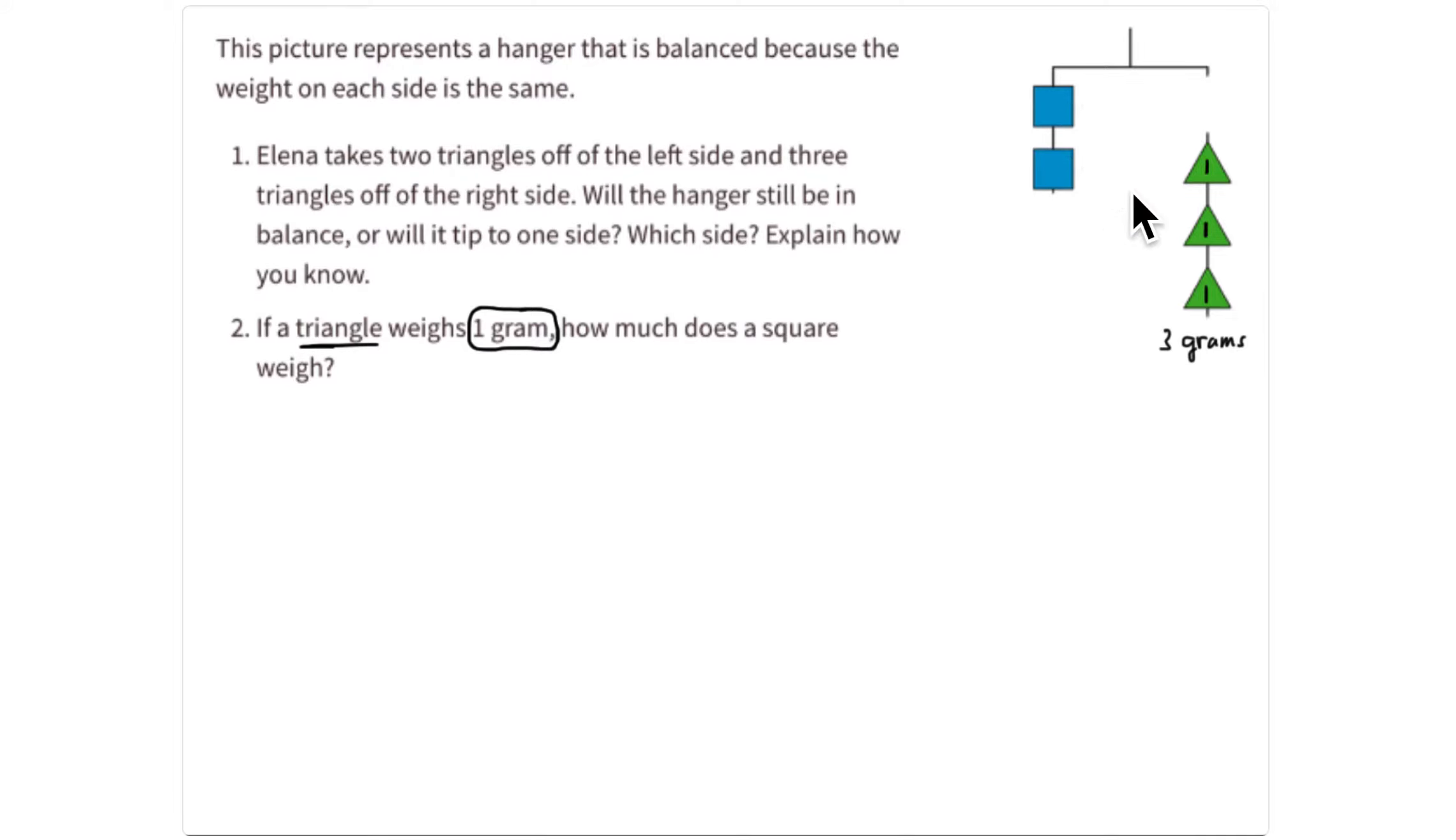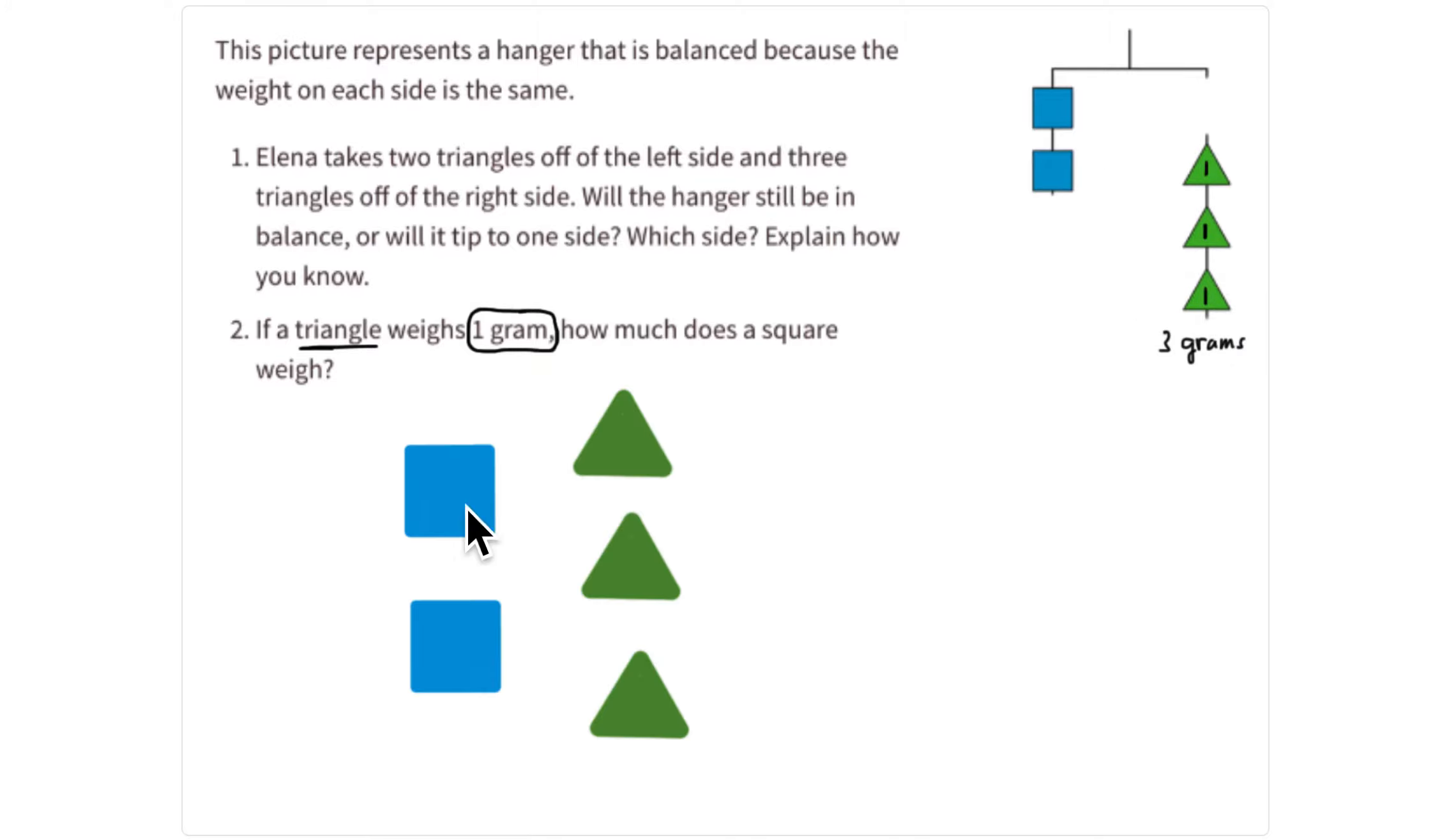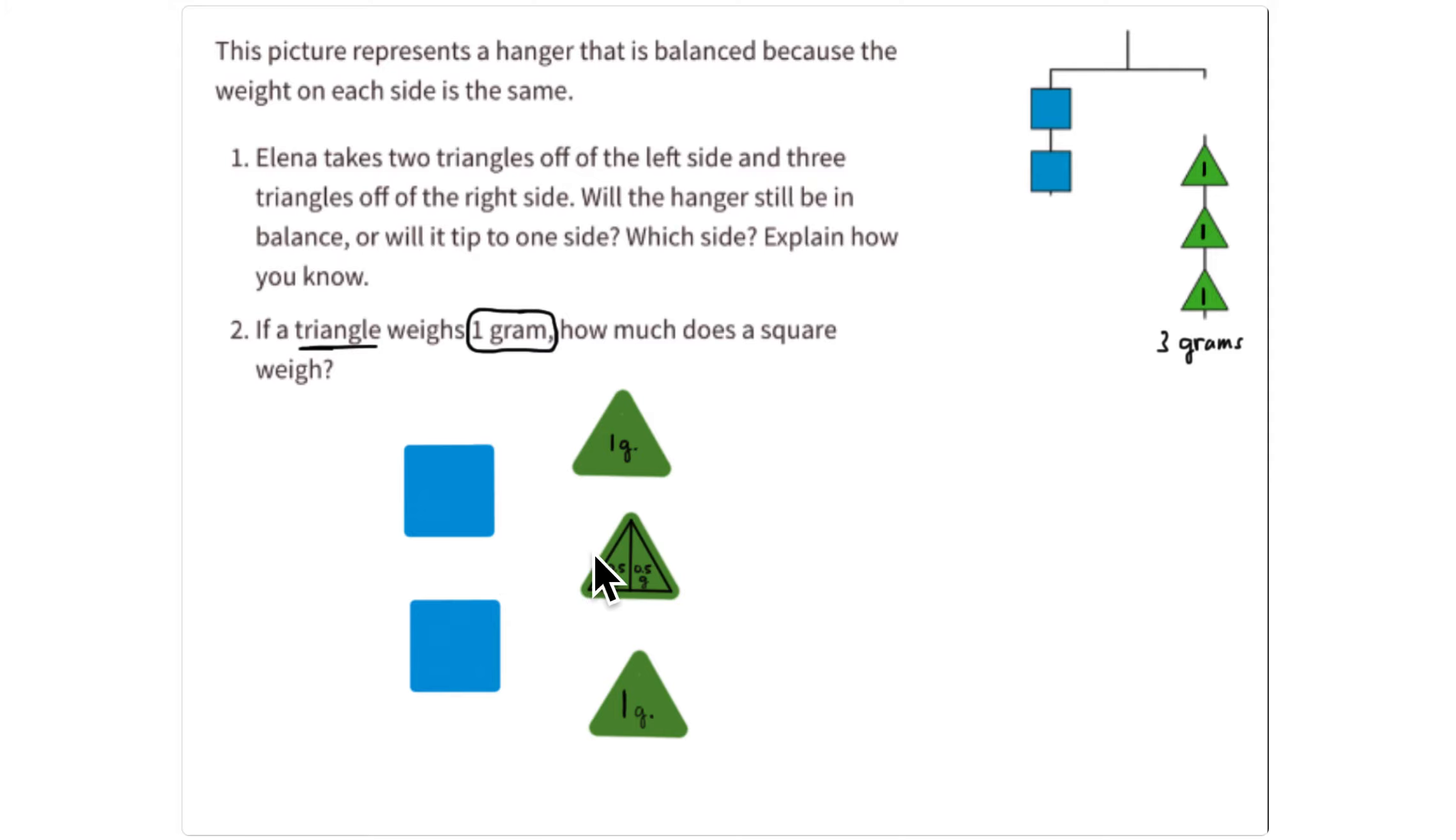So now we're down to two blue blocks equals three triangles, and those three triangles can be divided up among these two blocks. Imagine these are two large groups and you have three things divided into these two large groups. So two blue squares and three triangles divided into those two blue squares.